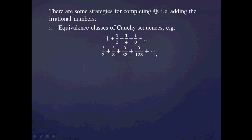For example, if you consider two sequences that both approach 2, both of those sequences would be members of the set representing 2. As a quick summary, a Cauchy sequence is a special sort of converging sequence where in addition to partial sums getting arbitrarily close to a limit, the terms also get arbitrarily close to one another. The only problem with this construction is that the arithmetic is very difficult.